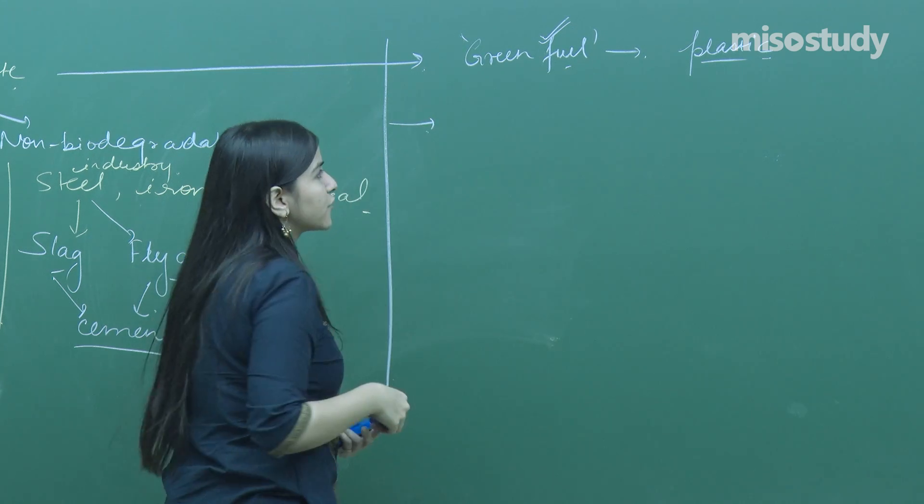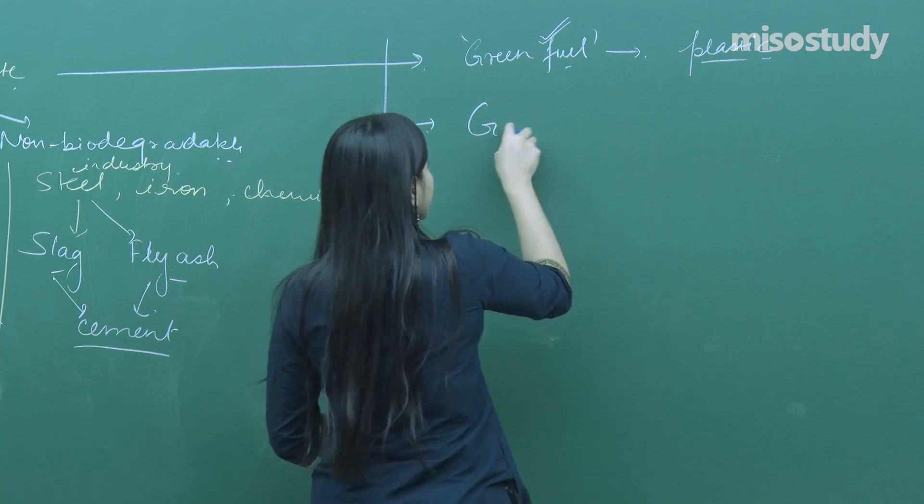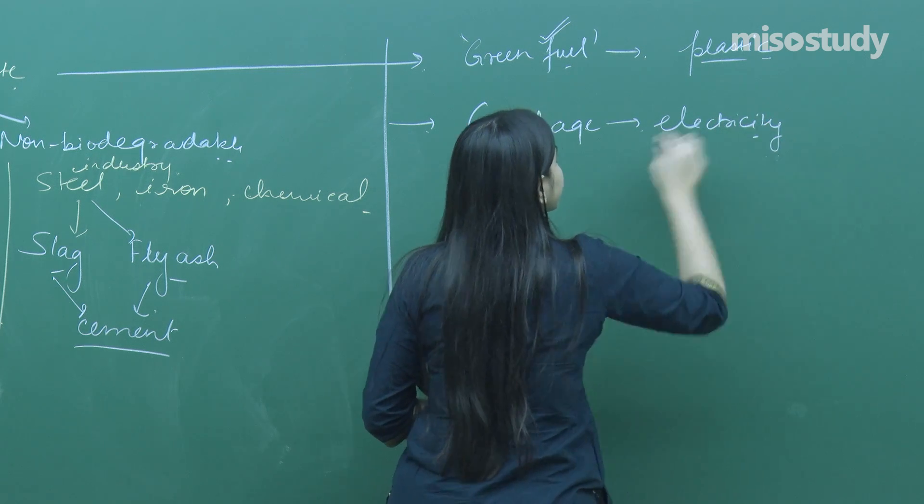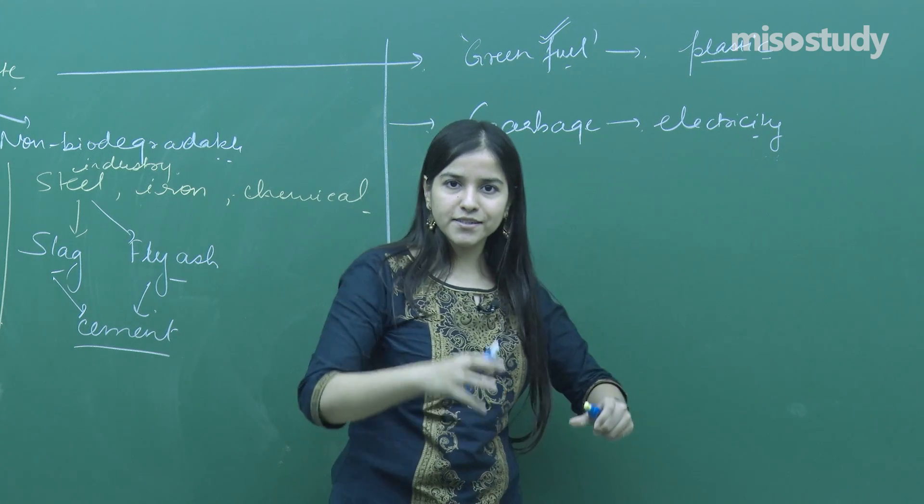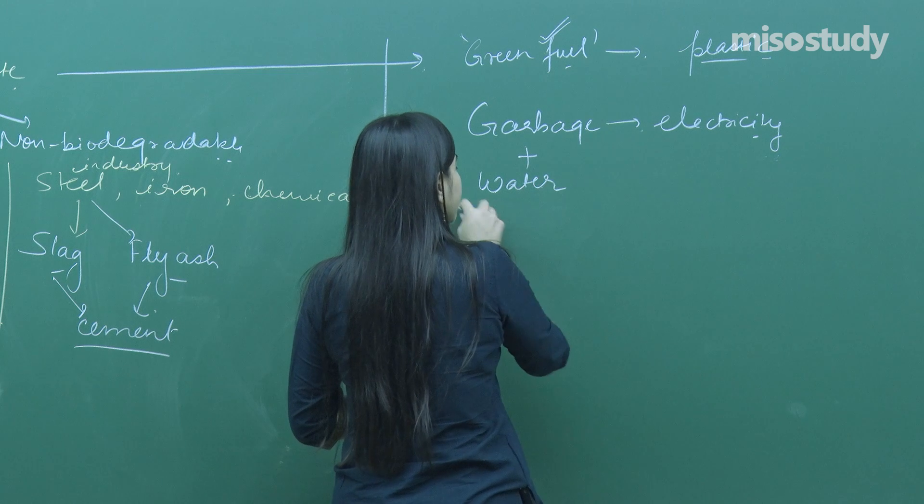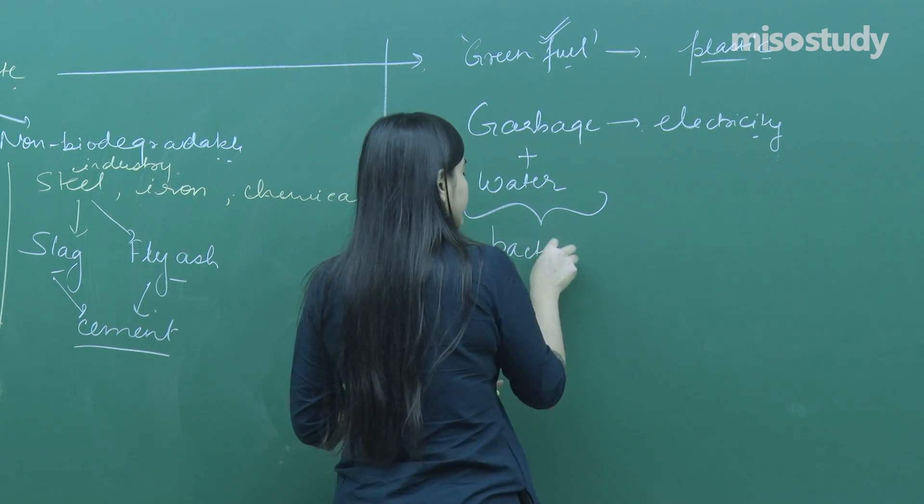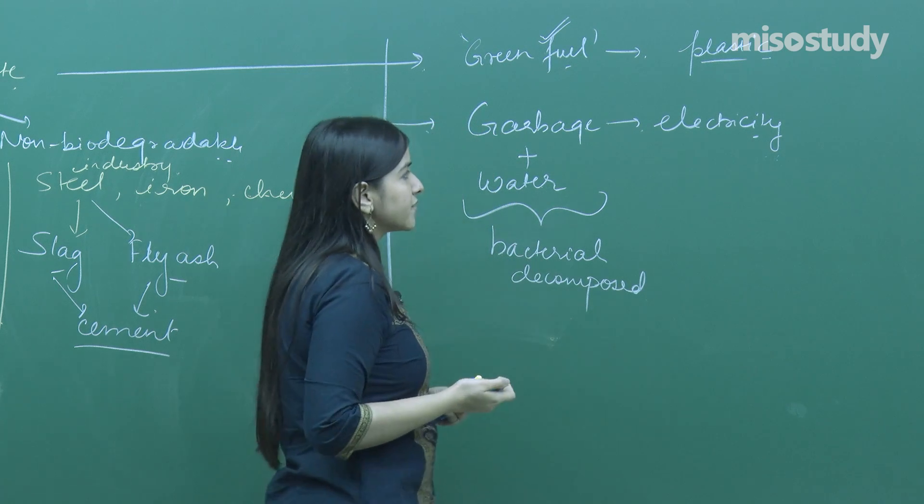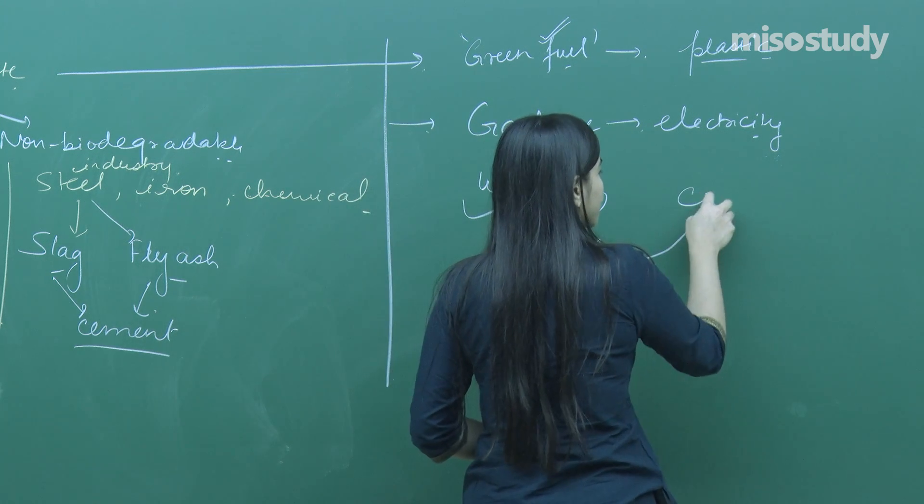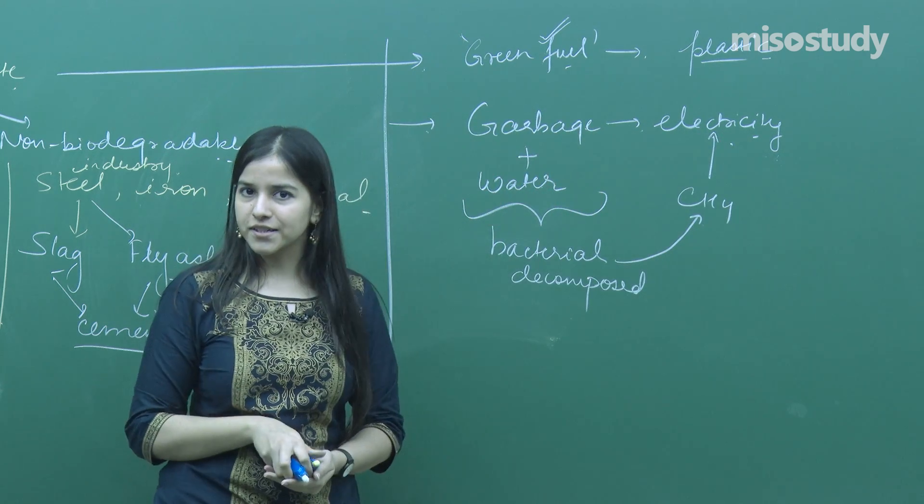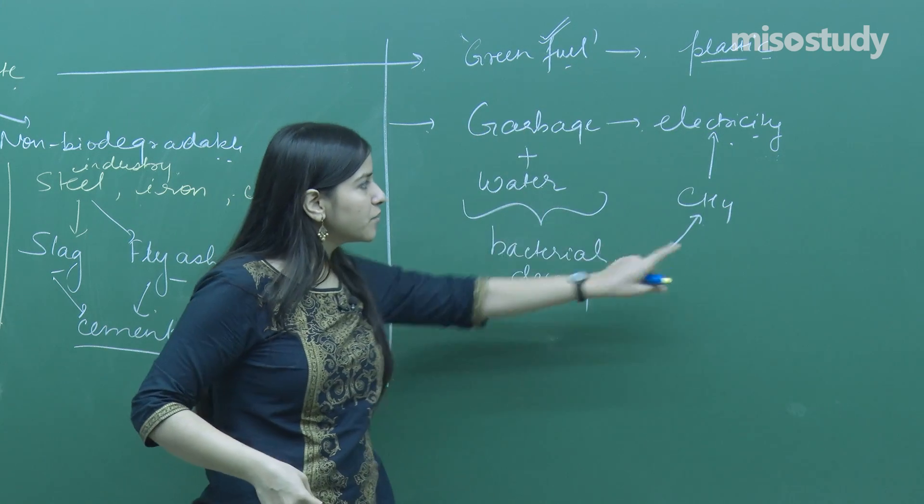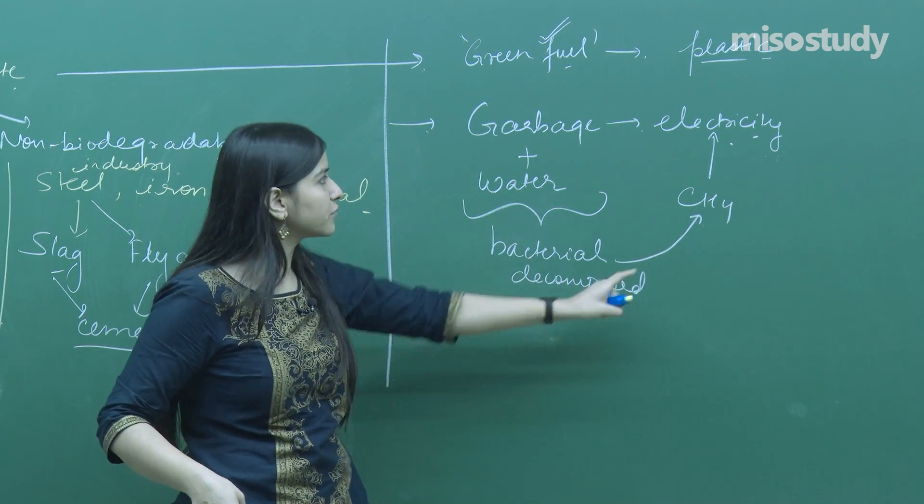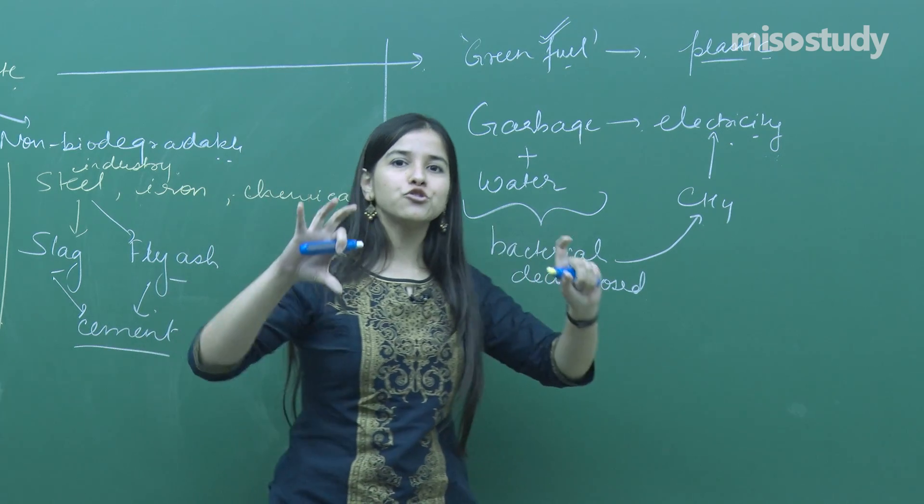Garbage can be directly used to produce electricity. How? Garbage is dumped and mixed with water. Then bacterial decomposition occurs, which produces methane. This methane can be directly used to produce electricity. That's how our demands are met, because power cuts are very common these days. Electricity can be produced from methane coming directly from garbage.